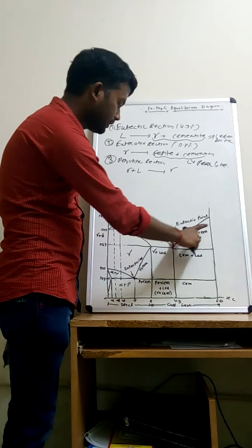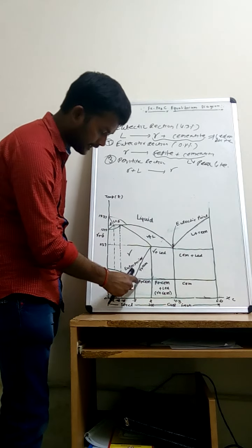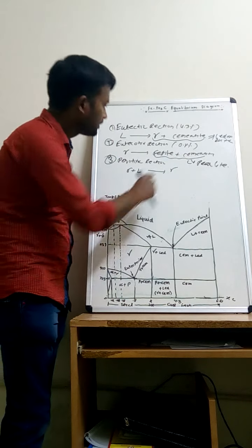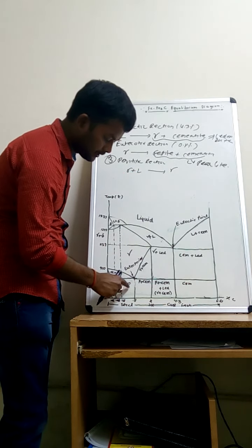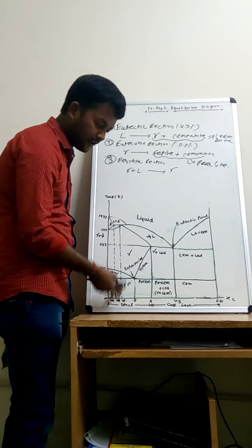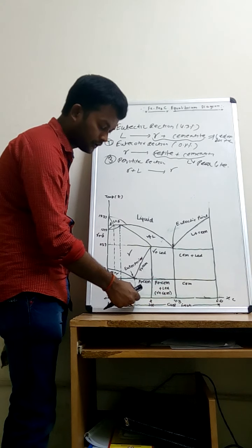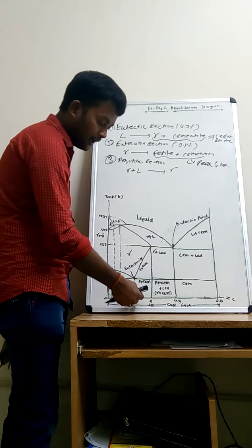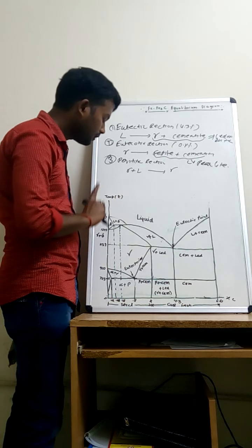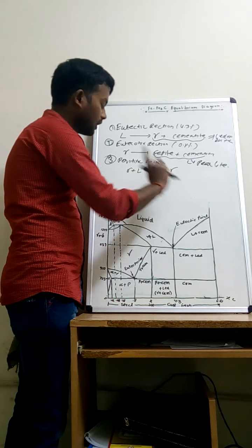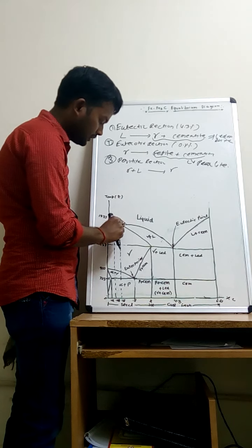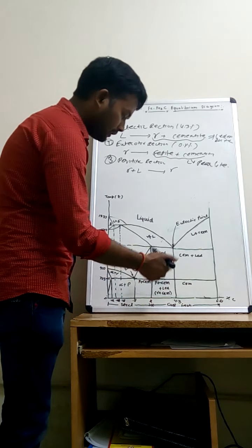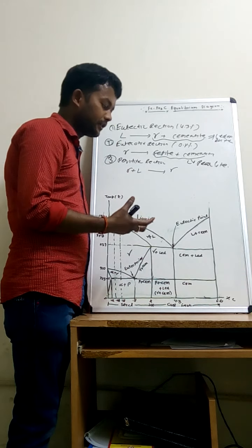The third reaction is the peritectic reaction, where delta plus liquid converts into gamma iron. This is called the peritectic point. These are the important regions and reactions in the iron-carbon equilibrium diagram. There are very important exam questions on hypoeutectic and hypereutectic designations. This eutectoid point at 0.8% carbon is key — before it, alpha is more, and after it, cementite is more.